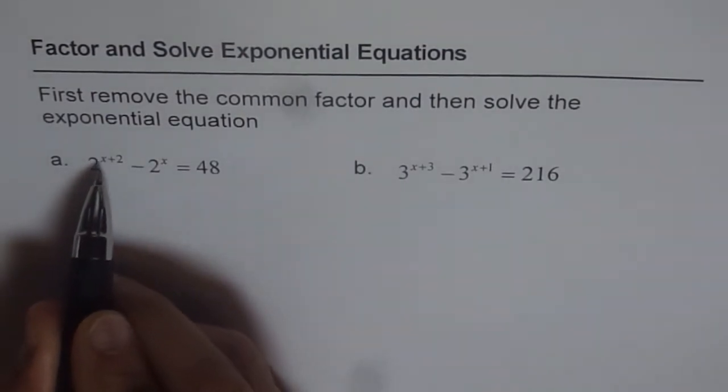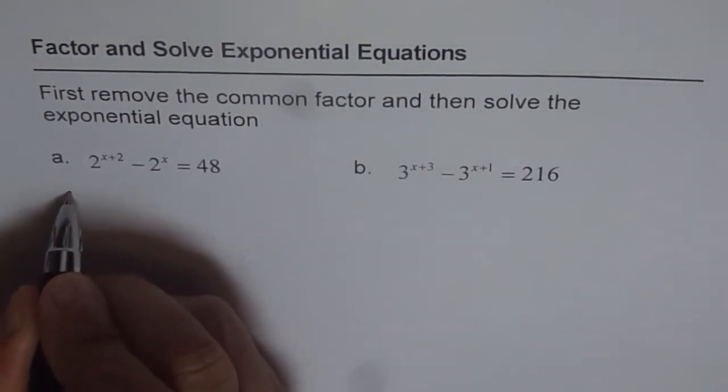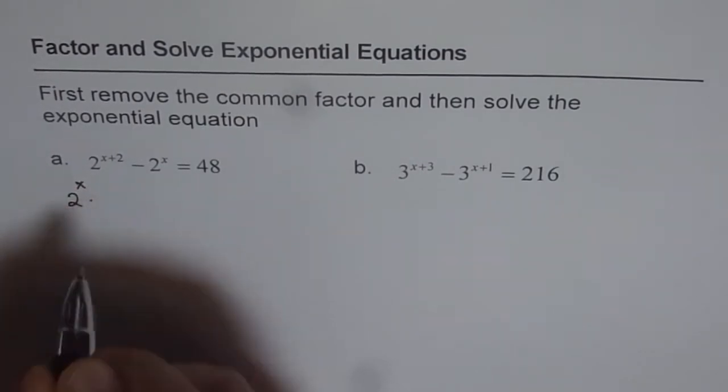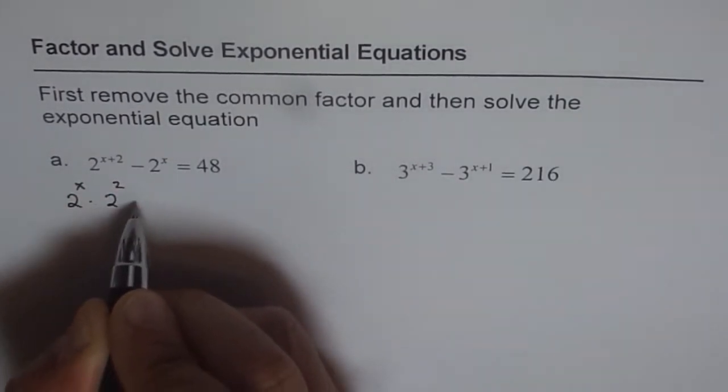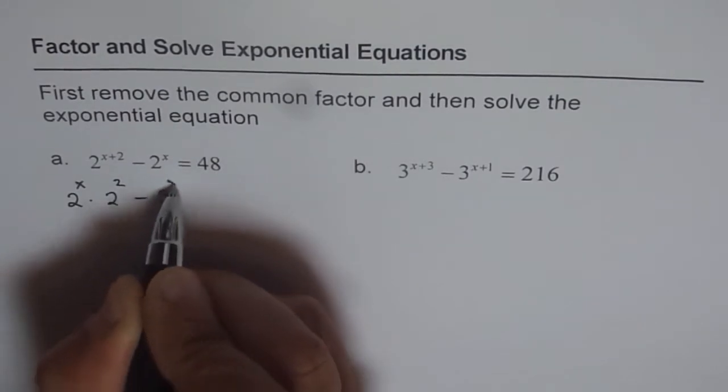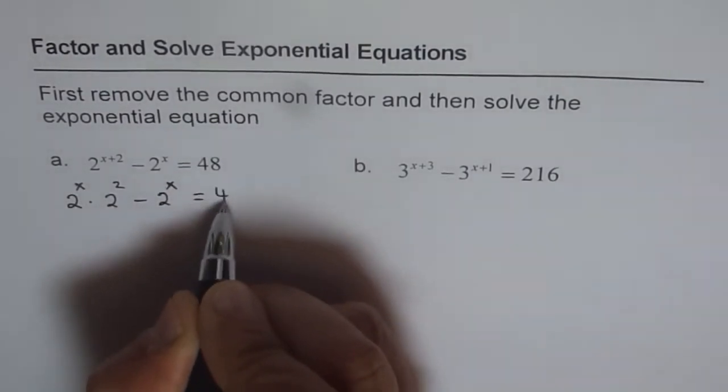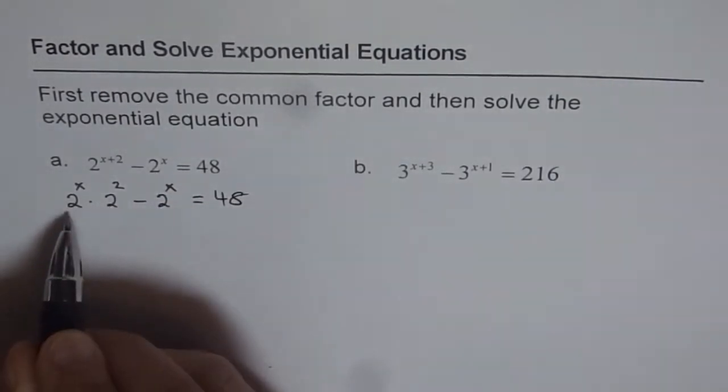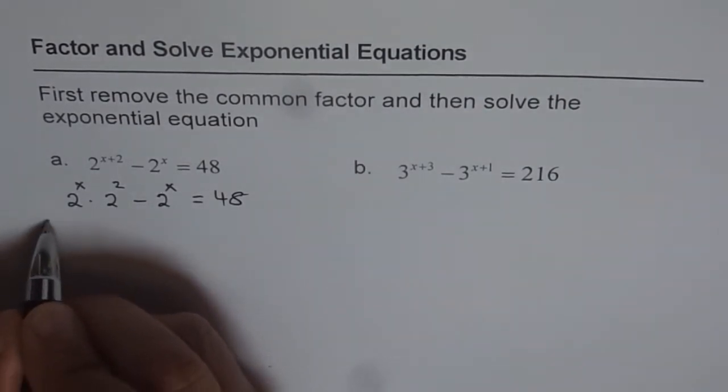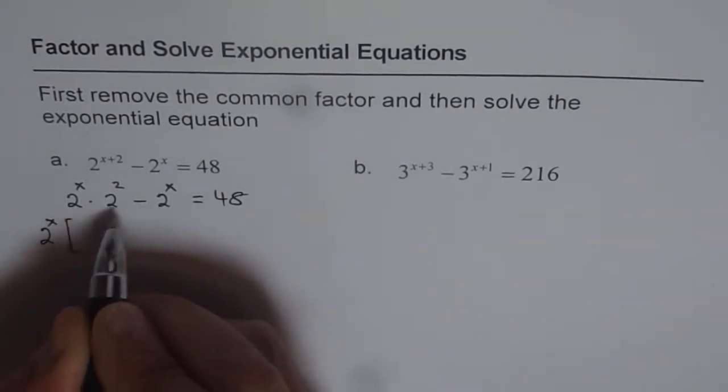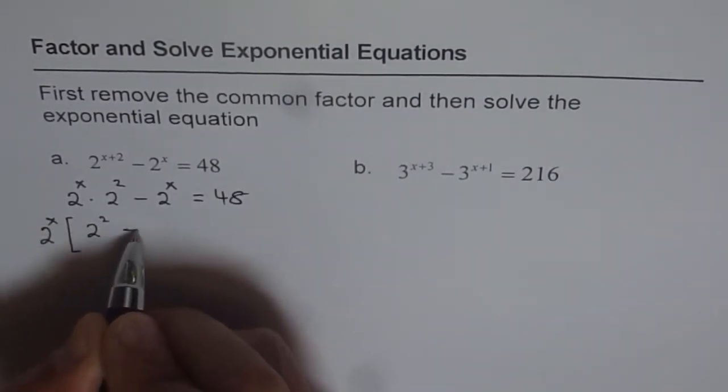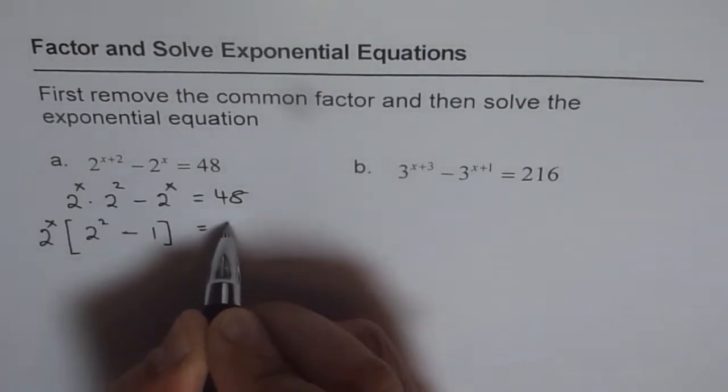The first one, 2 to the power of x plus 2 can be written as 2 to the power of x times 2 to the power of 2, correct? And then the second term is 2 to the power of x equals to 48. We can factor out 2 to the power of x, and what do we get?